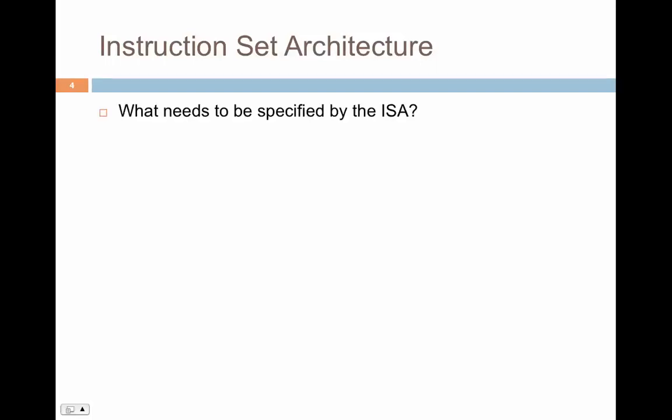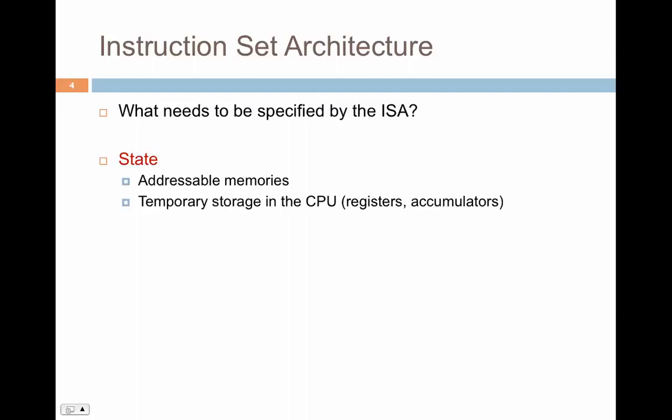One of the first questions to ask about the instruction set architecture is: what needs to be specified? The ISA can be divided into different classes, each with their own specifications. In embedded computing, there might be simpler instructions to execute; in x86 you might have complex instructions. The ISA can specify different levels of complexity depending on the target.